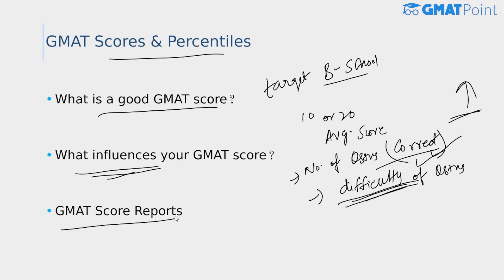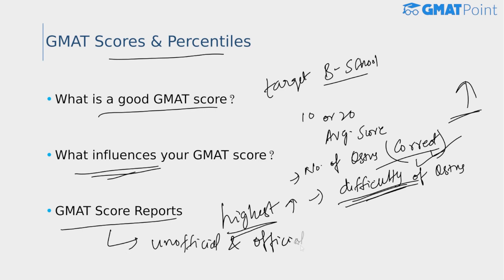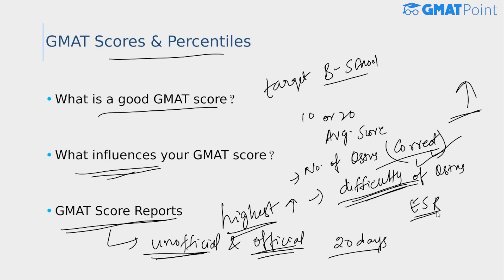Regarding score reports, remember that only the GMAT scores you want to report are available to B-school admission committees. In the MBA application process, they consider your highest GMAT score out of all attempts, and canceled scores will not appear on your score report. There are two types of score reports: unofficial and official. The unofficial score report is issued immediately after the test, and the official score report is available within 20 calendar days. We have made a separate detailed video on GMAT score reports and how to interpret them — the link is in the description below.